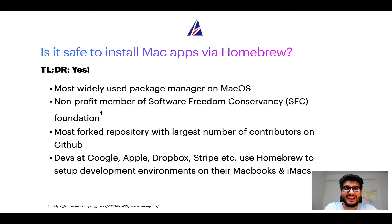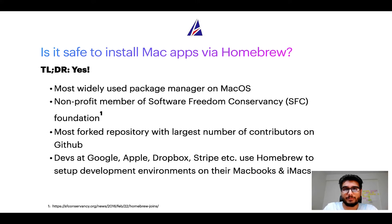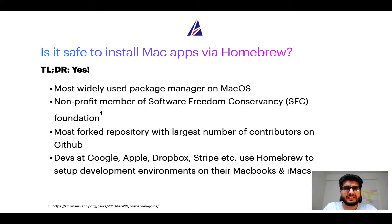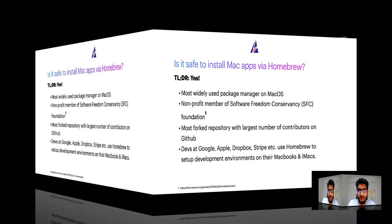You might also be surprised to know that Homebrew is the most forked project on GitHub and has the largest number of contributors on its GitHub repository. Many developers at organizations like Google, Apple, Dropbox, and Stripe use Homebrew to set up different development environments on their MacBooks and iMacs.